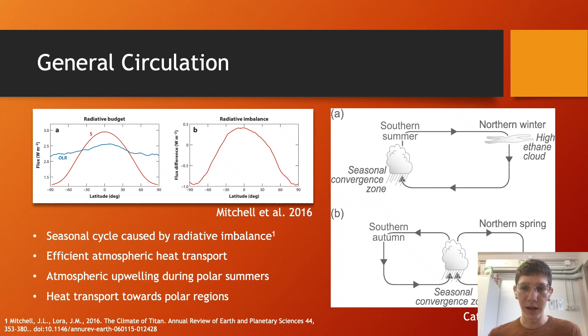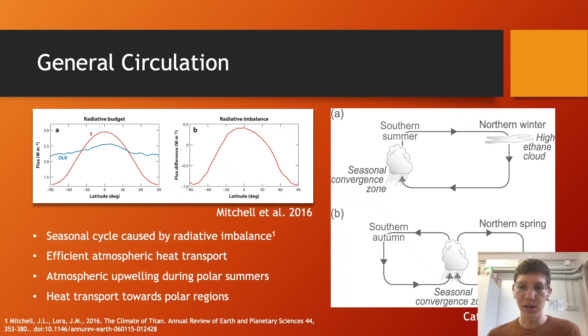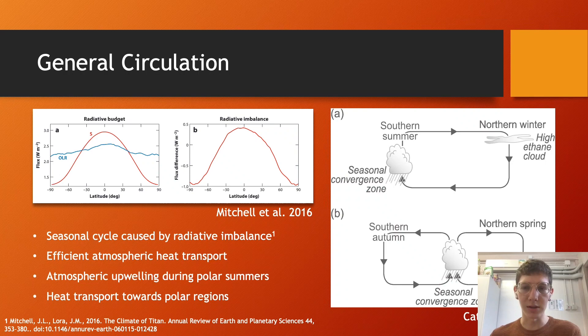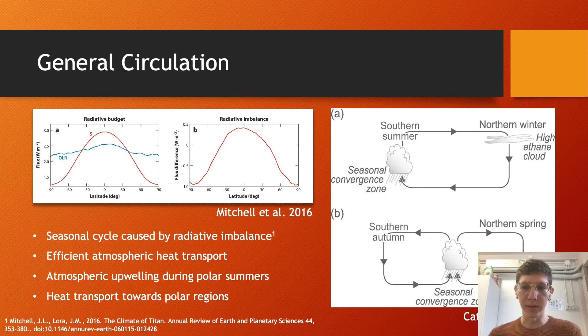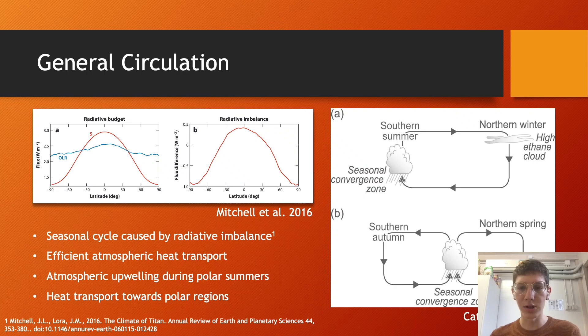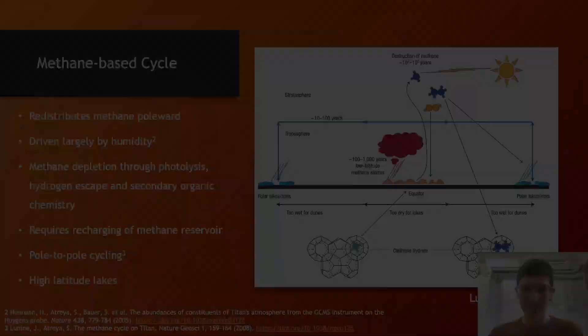During northern summer, the high solar insolation produces atmospheric upwelling, causing methane cloud formation and precipitation through the rapid cooling of air parcels. So lower latitudes consistently receive more insolation than higher latitudes, with a net heating near the equator. In response to this radiative imbalance, the atmospheric circulation acts to transport heat towards the colder polar regions to reach an equilibrium, which results in low-latitude desert regions.